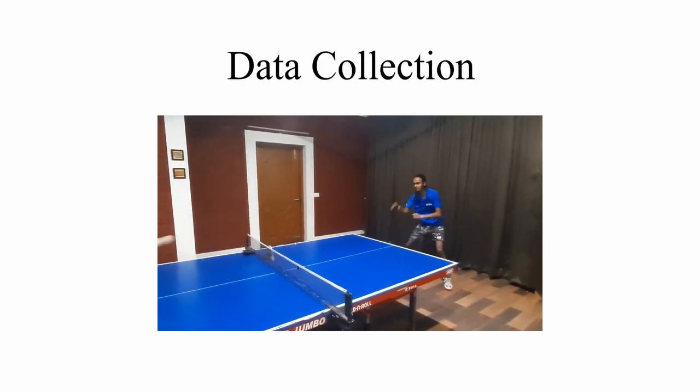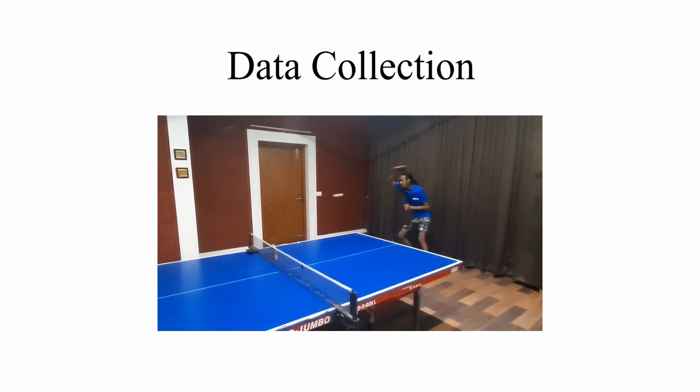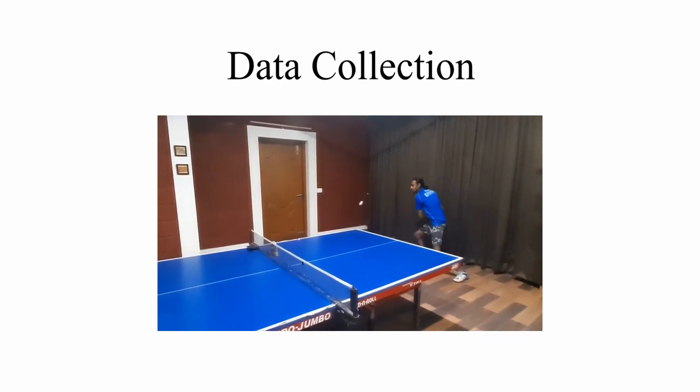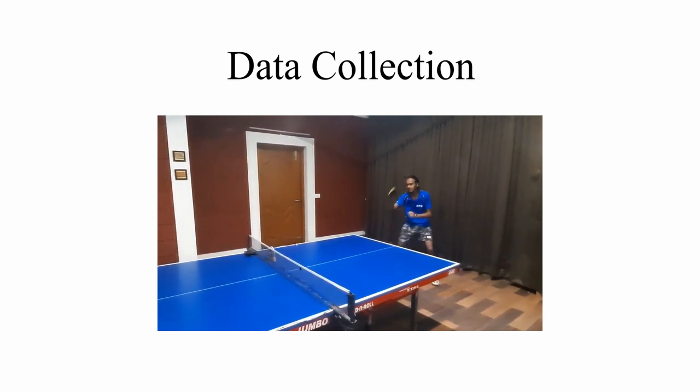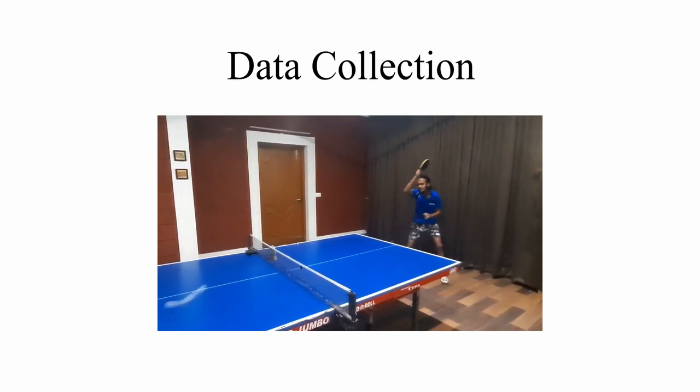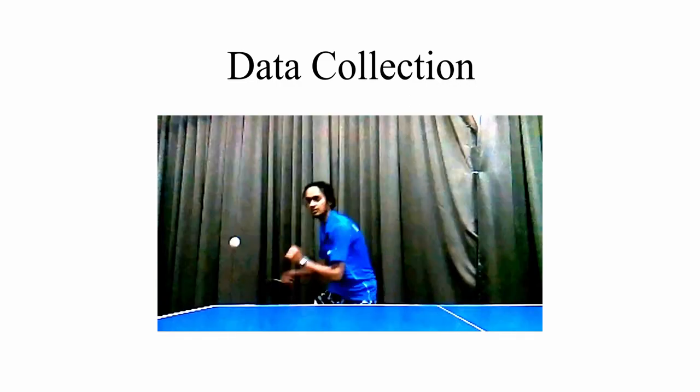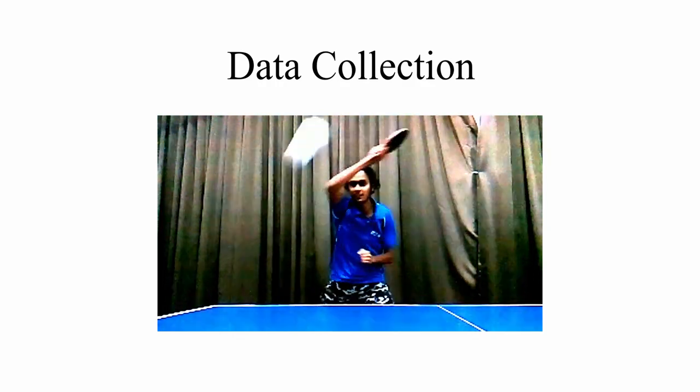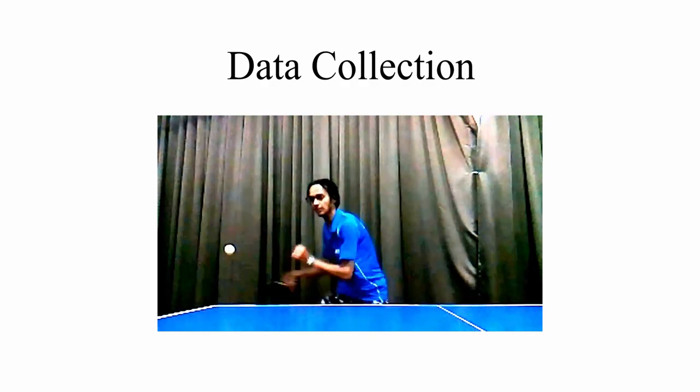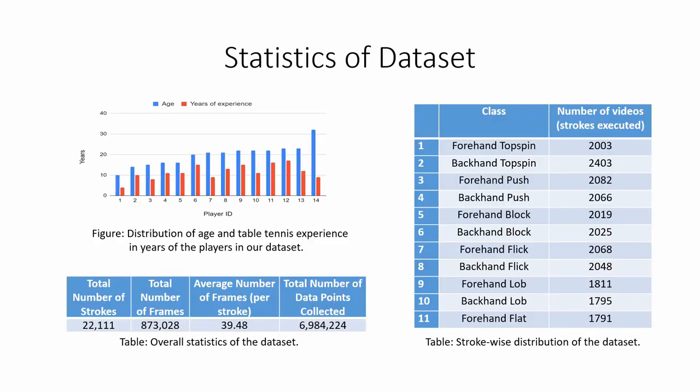This video shows a professional player executing forehand topspin strokes during a free-flowing rally. Our dataset collection setup has been employed to collect video data during stroke execution. The signals from the vibration sensors are used to collect feature-rich video snippets. The video recording starts when the ball pitch is detected on the player's side of the table and it is stopped when the ball pitch is detected on the opposite side. The resulting video snippets collected are as shown. A 100 frame limit for video recording is used to address the case where the ball doesn't pitch on the other side of the table. The video snippets are recorded at 720p resolution and at 60 frames per second.